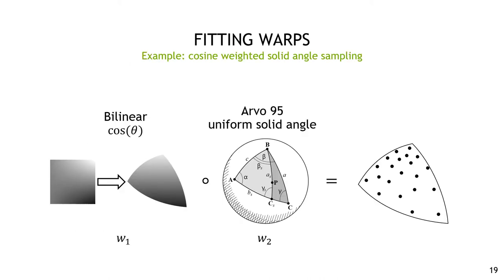Let's start with a really simple but surprisingly effective example combining only two warps: Arvo or Ureña's uniform solid angle warp and a bilinear warp to approximate the missing cosine term. If the cosine warp approximation is good, this should give us an approximately cosine weighted solid angle distribution. The bilinear term isn't a perfect fit for the cosine, but because the cosine term is slowly varying the bilinear warp is a decent approximation, and we end up with significantly higher sampling efficiency on average. In this case bilinear is also convenient and extremely fast to fit because the control points are at the boundary of primary sample space, so they map to the vertices of the spherical triangle and take on the value of the cosine term at the vertices. Note that the existing solid angle warp is applied first because it can't compensate for any other warps, and then the cosine warp is fit to the solid angle warp.